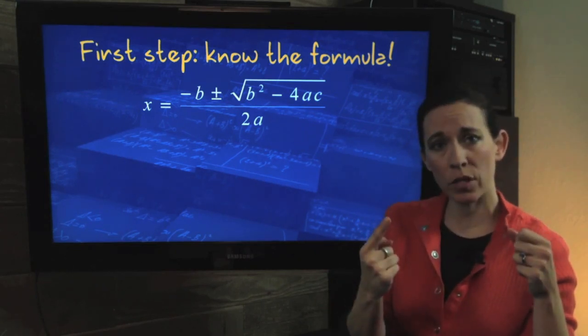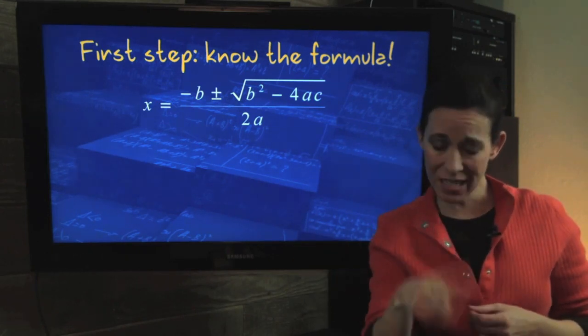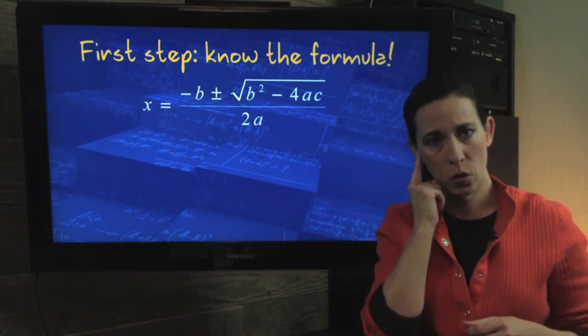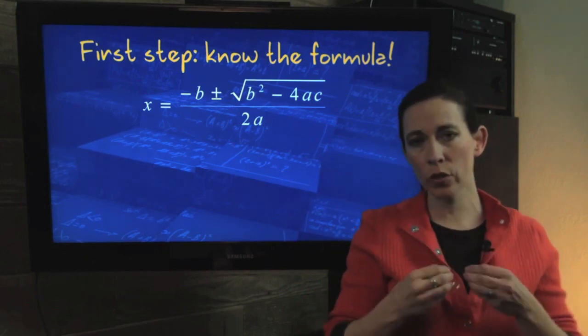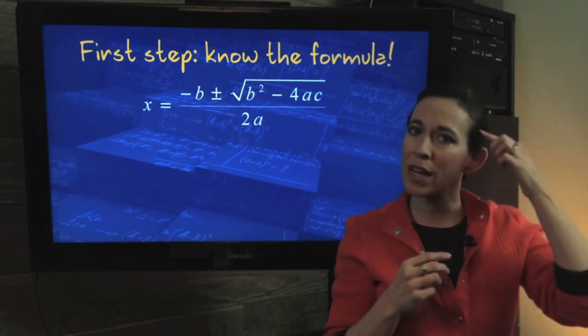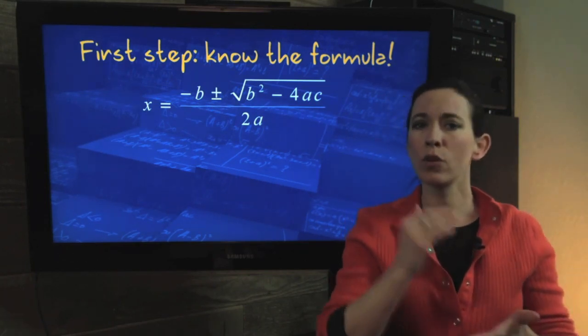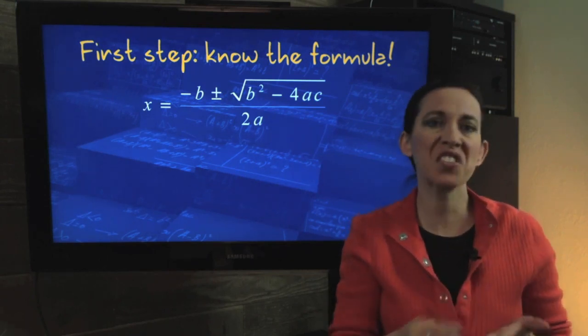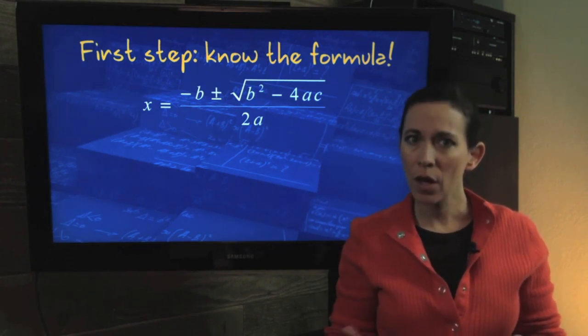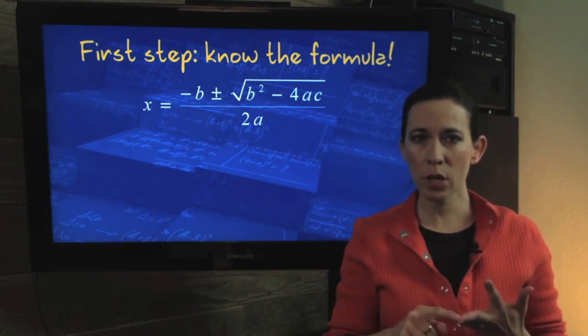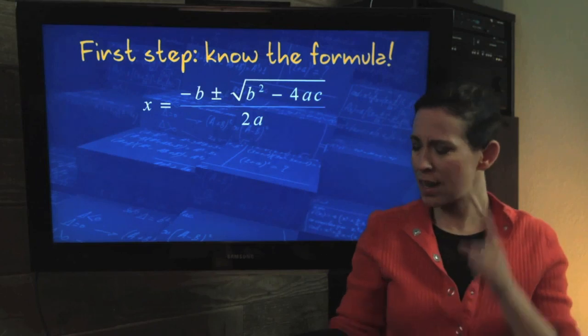But I think one of the best methods of memorizing it is every time you use it for a problem, you rewrite it. Rewrite it and say it out loud to yourself. One, because it gives you a physical of writing it. Two, it gives you a visual. You're going to see it over and over again. And three, it's going to give you an auditory because you're going to say it over and over again. The more senses that you use to try to learn something and memorize something, the more likely your brain is going to access it when you get nervous, like when you're trying to take a test. So trust me, it takes an extra six seconds per problem to rewrite it. But it's a lot faster, easier, and cheaper than taking the class over again.